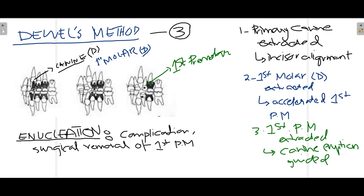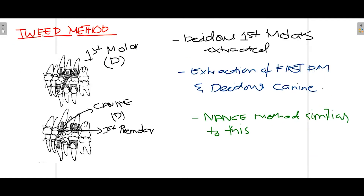In the third and last step, the first premolar is extracted so that the canine can erupt in its guided position and normal alignment is achieved. A complication can occur due to premature eruption of the permanent canines, which causes the first premolars to become impacted between the canines and second premolars. When this occurs, enucleation — surgical removal of the impacted first premolar from within the bone — is performed.